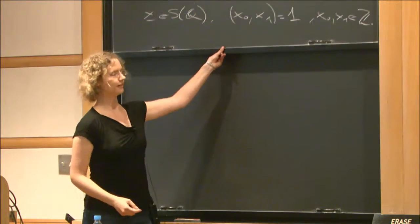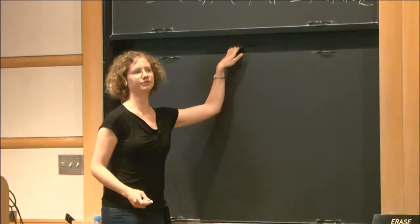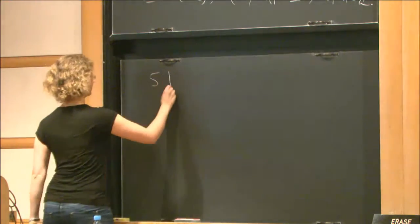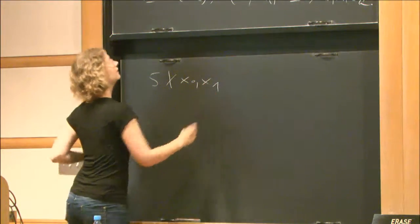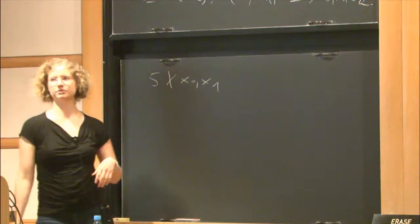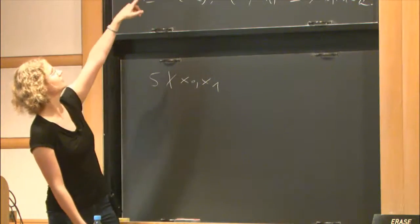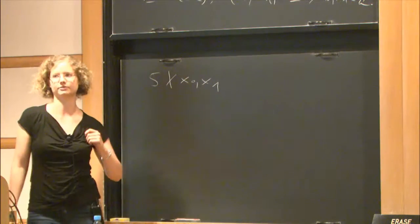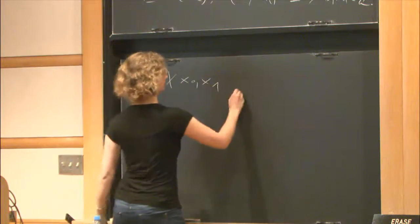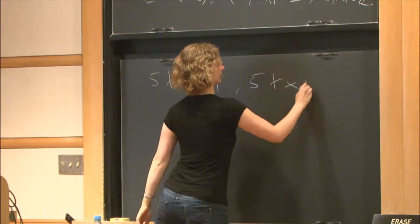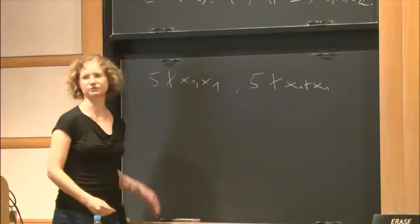Then I claim that 5 can't divide neither x0 nor x1. You see this by considering the system of equations. If 5 would divide the left-hand side, it would divide x2 and then x1 by the second equation. So you can't divide either of these and in a similar way it can't divide, for example, x0 plus x1 and the other thing.